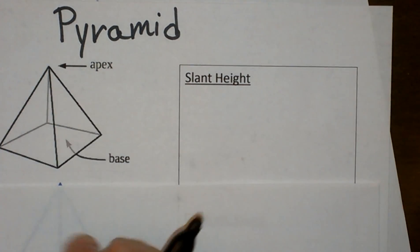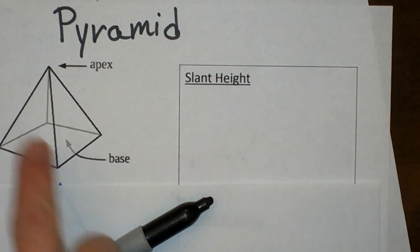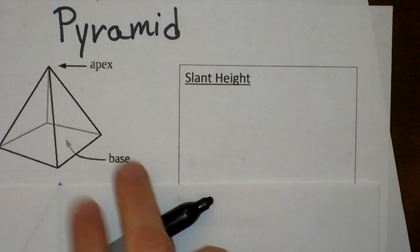So this pyramid has what we call five faces: one, two, three, four, and then the base is the fifth.